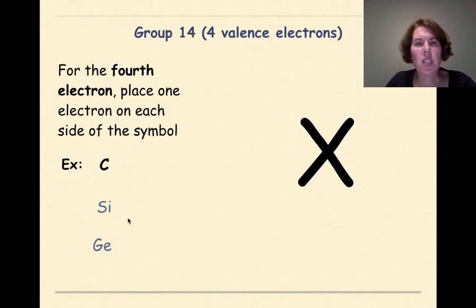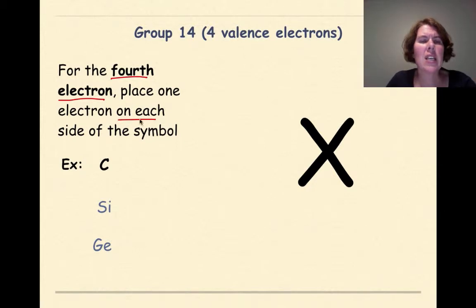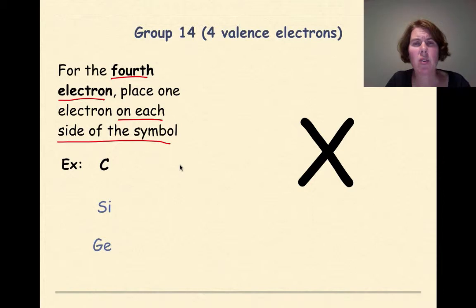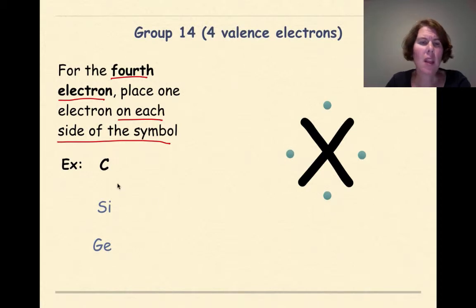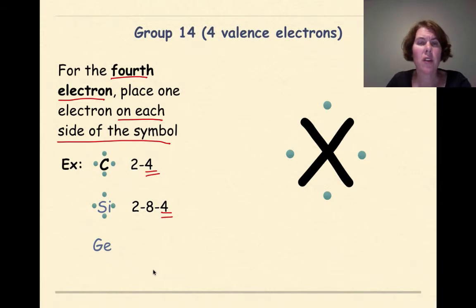Group 14 with 4 valence electrons goes against what we've been doing — instead of putting the first 2 valence electrons together, for 4 electrons we place 1 electron on each side of the symbol. If you go on to honors or AP chemistry, you'll learn about hybridization and it will make sense. For now, just remember: 1 electron on each side. Carbon is 2, 4; silicon is 2, 8, 4; germanium is 2, 8, 18, 4 — all have 4 valence electrons placed 1 per side.